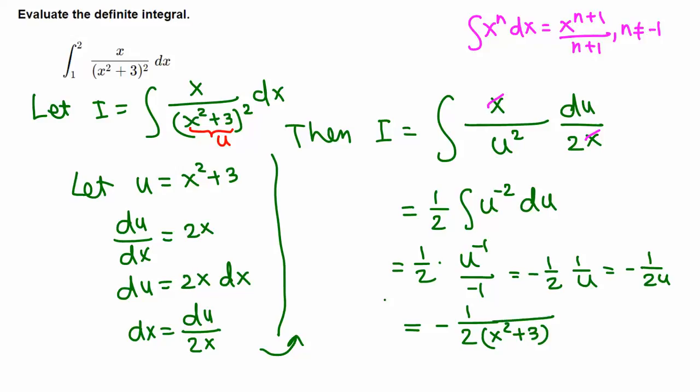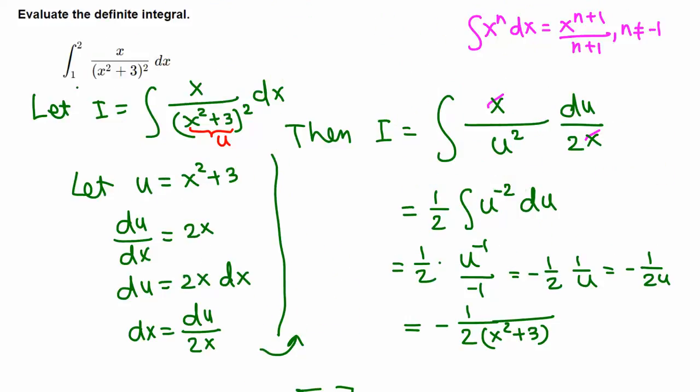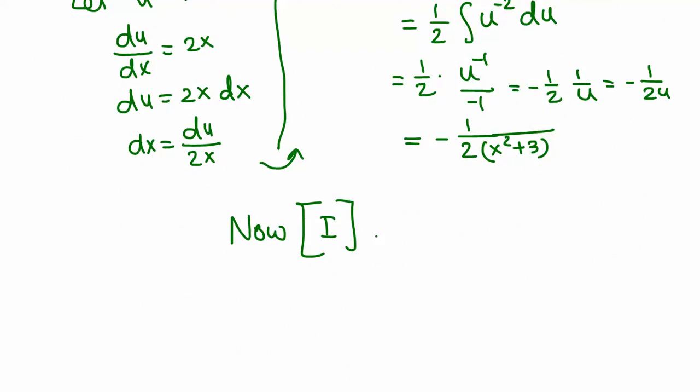To complete this question, we need to evaluate at the upper and lower limits. Our limits were 1 through 2, so we replace x by 2 (the upper limit) minus replace x by the lower limit 1.